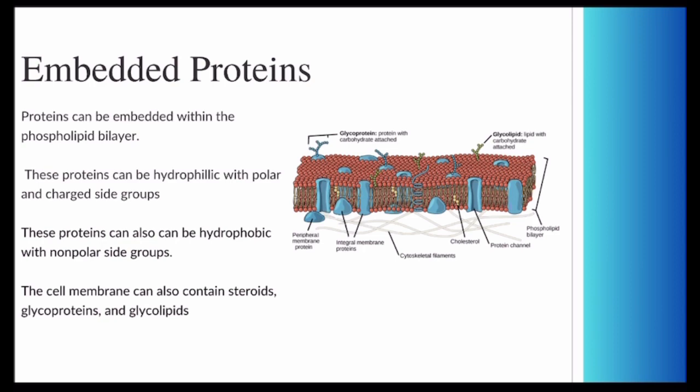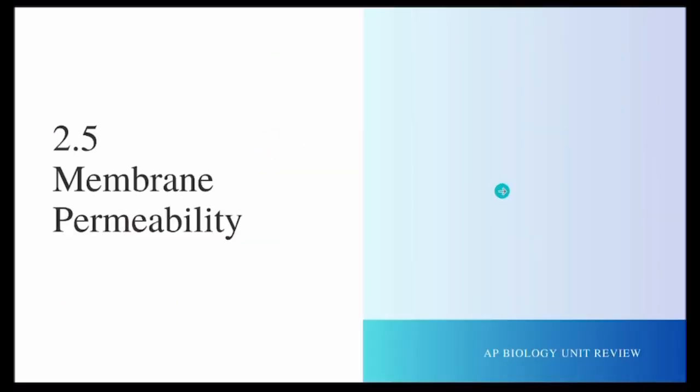The plasma membrane will typically have proteins embedded within it. These proteins can be hydrophilic with polar and charged side groups, or they can be hydrophobic with non-polar side groups. The cell membrane can also contain glycoproteins, shown here, as well as glycolipids, shown here.